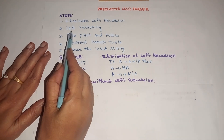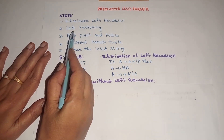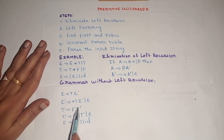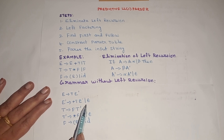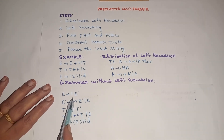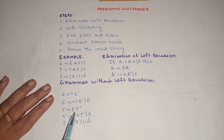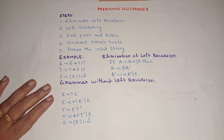The next step is to find left factoring if there are common prefixes. We apply left factoring only if there are common prefixes in the right hand side of the productions. Here E-dash has productions plus T E-dash and epsilon — no common prefix. T-dash has star F T-dash and epsilon — no common prefix. F also has no common prefix. So we can skip the left factoring.